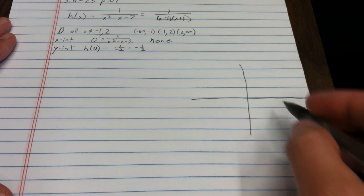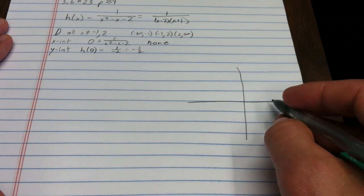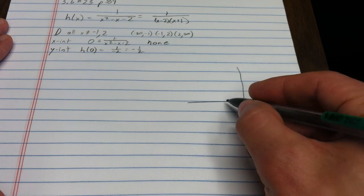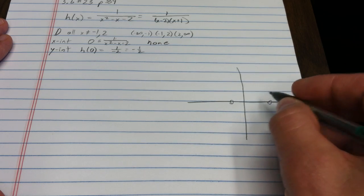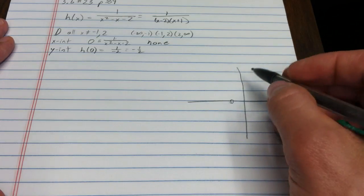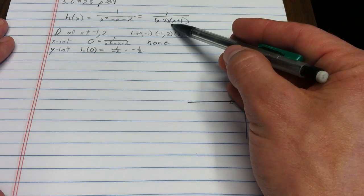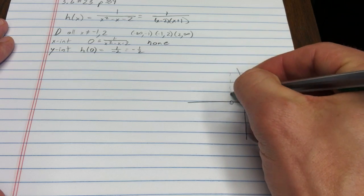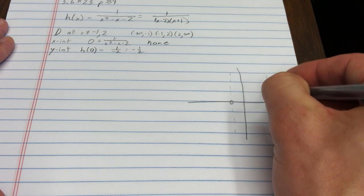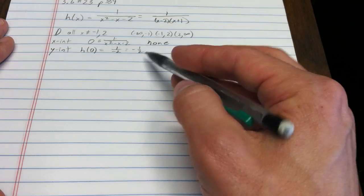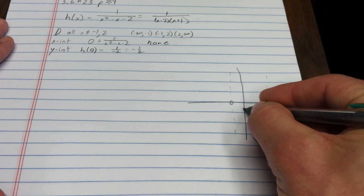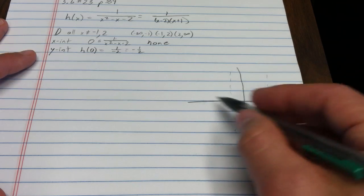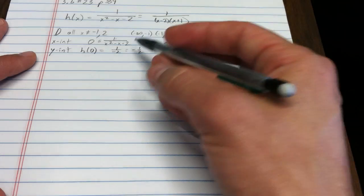At this point I typically start sketching the picture. I know the function is not defined at negative 1 and 2. Since the denominator equals zero and the numerator doesn't, those are vertical asymptotes. I have a y-intercept at negative one-half and no x-intercepts, so the curve never crosses the x-axis.